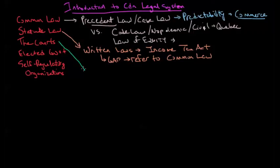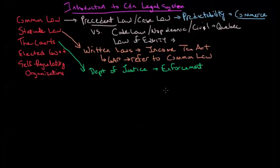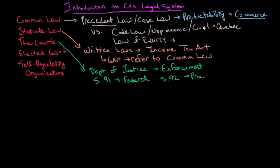The courts in Canada are part of the various departments of justice, either at the federal or provincial level, and their role is the enforcement of our laws as written. Section 91 of the Constitution Act of 1867 tells us what falls under federal authority, and Section 92 tells us what falls under provincial authority. For example, most securities and insurance matters fall under provincial authority, while most income tax questions fall under federal authority, though there are provincial authorities for administration of income tax legislation.